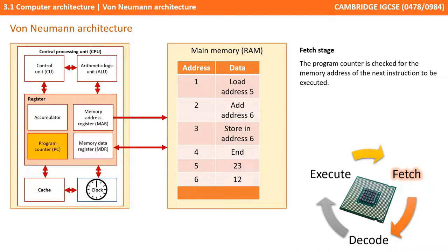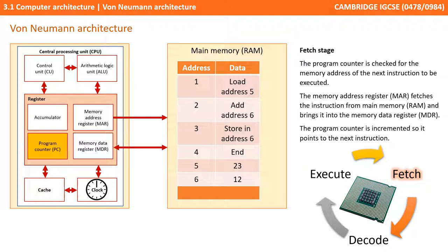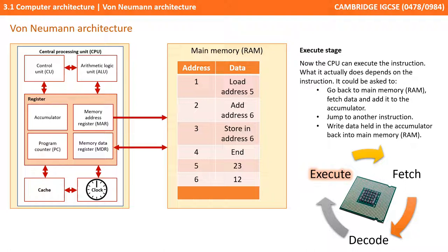Let's look at a typical fetch-execute cycle in a little more detail. We start with the fetch stage: the program counter is checked as it holds the address of the next instruction to be executed. This address is used by the memory address register to fetch the instruction needed from main memory and bring it back into the memory data register. The address in the program counter is then incremented to point to the next instruction. Now the instruction is in the CPU, the control unit decodes the instruction to see what has to be done. Once we know what to do, we execute the instruction. What we do depends on what the instruction is — we could fetch data from main memory and add it to the accumulator, jump to another instruction, or write data held in the accumulator back into RAM.